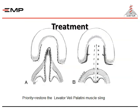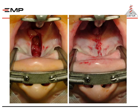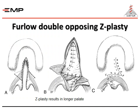For cleft palate treatment, the priority is to restore the levator veli palatini muscle sling. A photo shows a pre-operative and post-operative case of cleft palate before and after repair. For cleft palate, the Furlow double opposing Z-plasty technique is used for repair, which results in a longer palate.